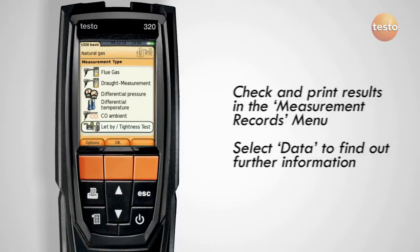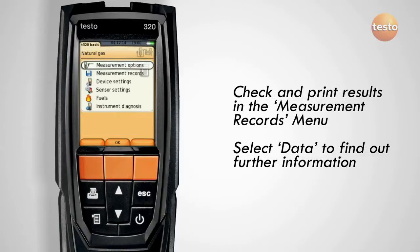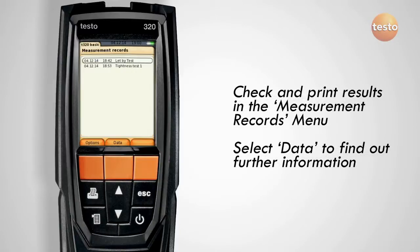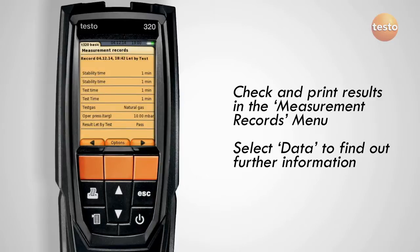To check and print the results, go to the measurements records menu, select the relevant tests, and view the data, which can be printed if required.